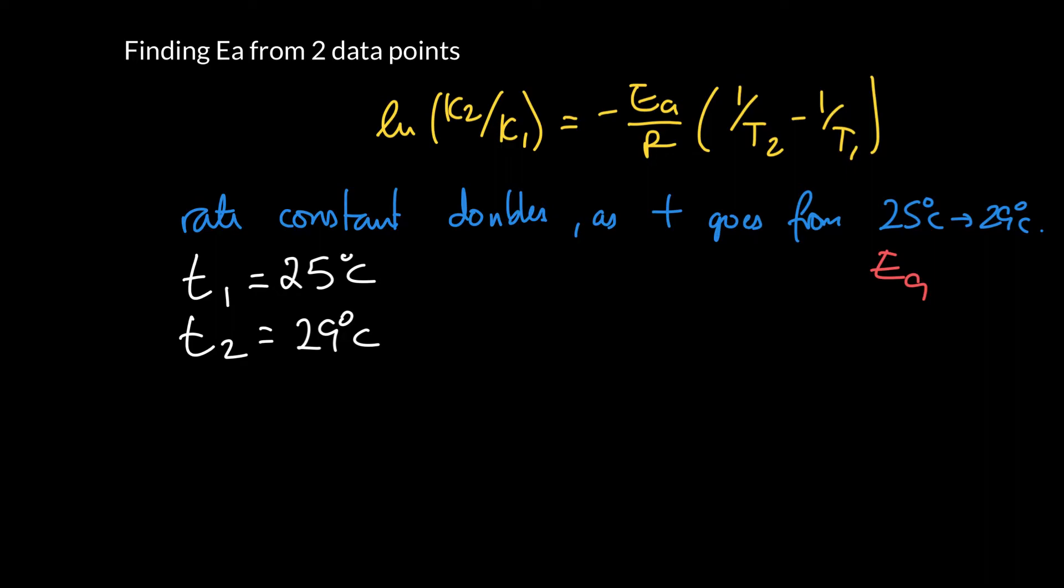What does it mean by doubling? Well, essentially we're saying the rate constant at T2 over the rate constant at T1, right? So that's K2 over K1 is equal to 2. We're told it's double, so we'll take that as exact, but probably that's not really an exact number.